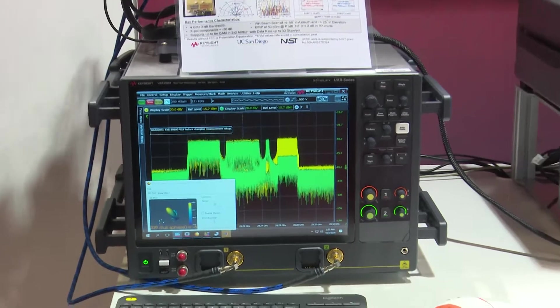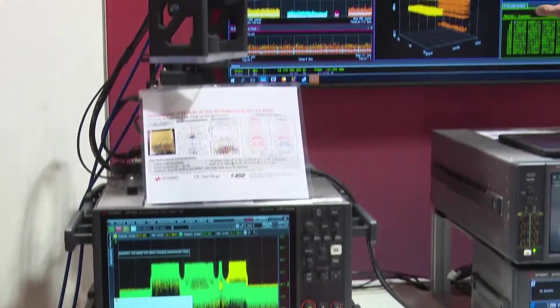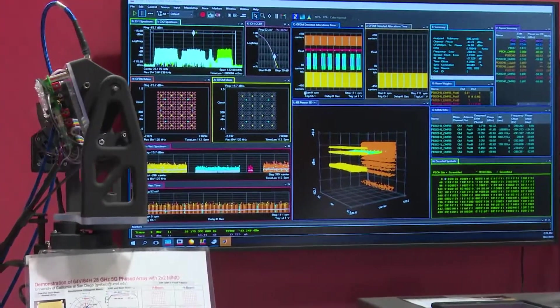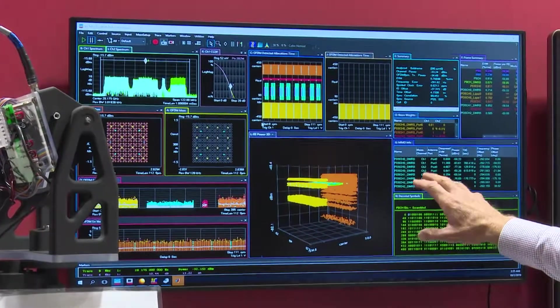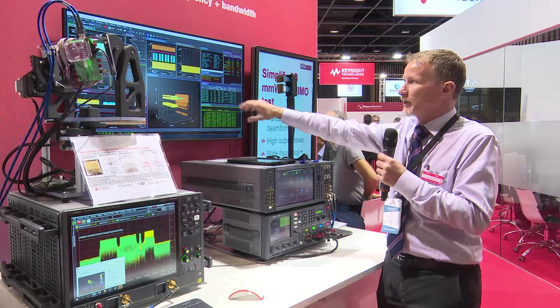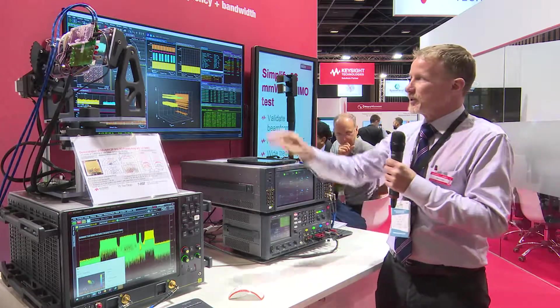So we take the digitized samples and we can do a number of interesting analysis using our 89600 VSA software which I have running over here in the middle screen. This is running right on the scope but I have a different monitor plugged in. So on the monitor you see a number of interesting results.